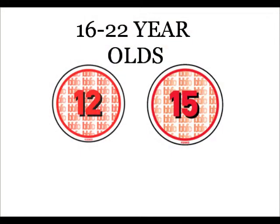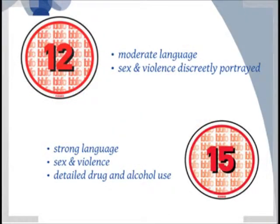Our film is aimed at 16 to 22 year olds, although I was uncertain as to whether to certify our film as a 12 or a 15, so I researched into film certifications in order to establish what certificate was most suitable. From my research, I found that 12 films contain moderate language and sex and violence may be discreetly portrayed. Films certified as a 15 can contain a lot of strong language, sex and violence, and they can include drug and alcohol use on a more detailed level than a 12 certified film. After researching these two film certifications, I have decided to certify our film as a 15, due to the theme of suicide and the presence of alcohol in the opening of our film.